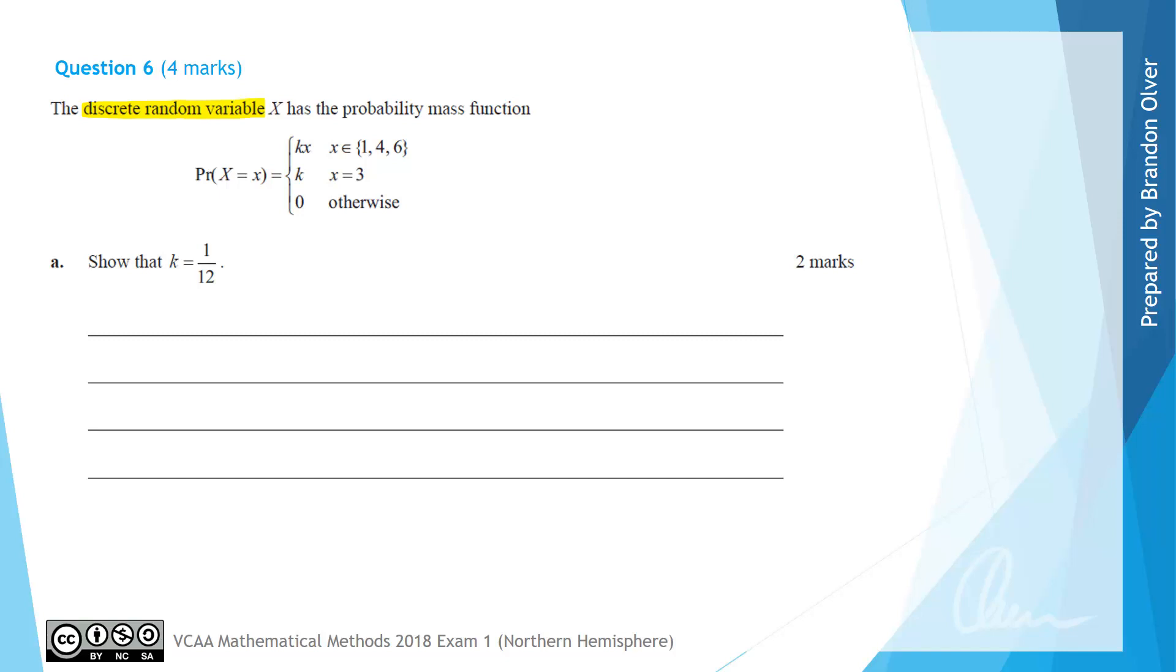And that a common mistake was likely that people thought that this was a continuous random variable based on the way it had been defined. However, it is only discrete, with x equaling 1, 4, 6 and 3 being the 4 discrete values that x can take.